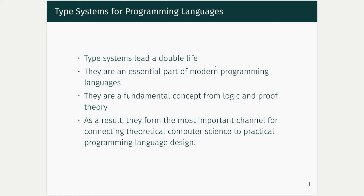Type Systems are an essential part of modern programming languages and they do helpful things like keeping you from adding six into a file. But it turns out that types are also a fundamental concept of logic and proof theory. So what this means is that the science of Type Systems forms a really satisfying link between theory and practice — they're one of the biggest channels for connecting results in theoretical computer science to practical programming language design.